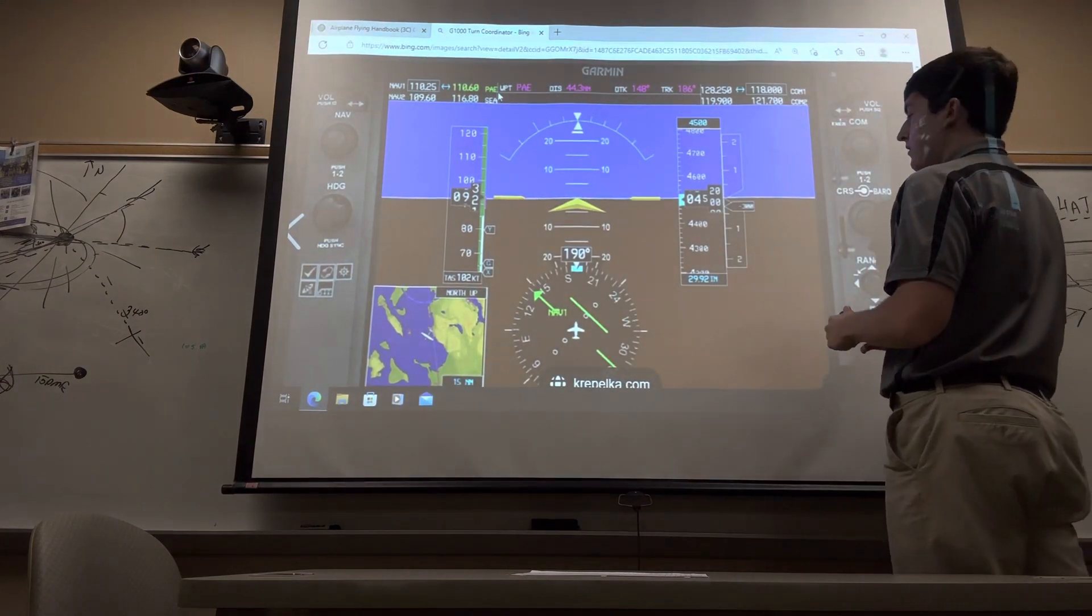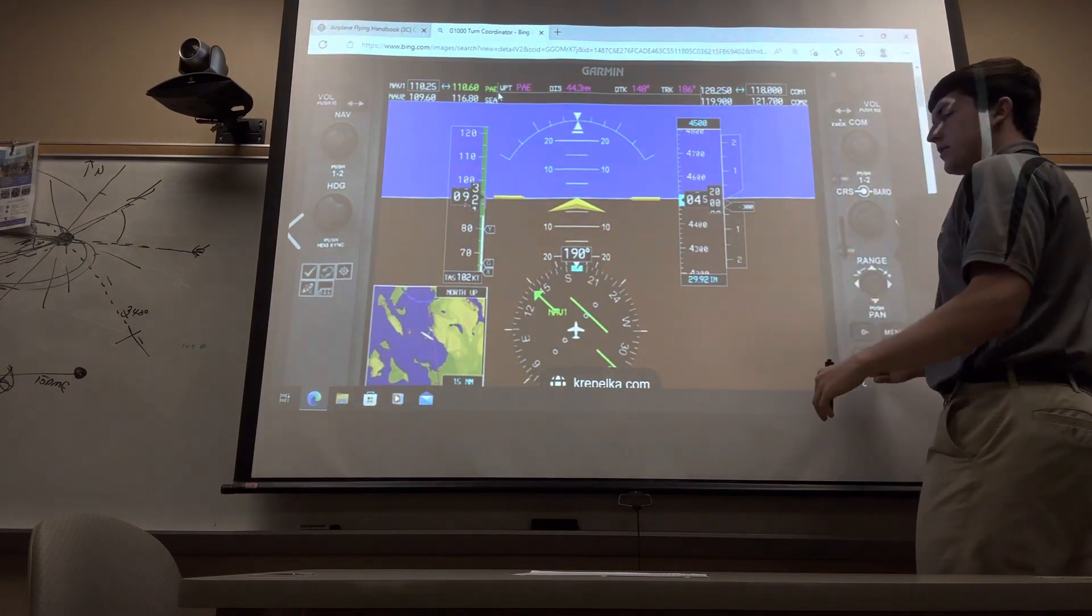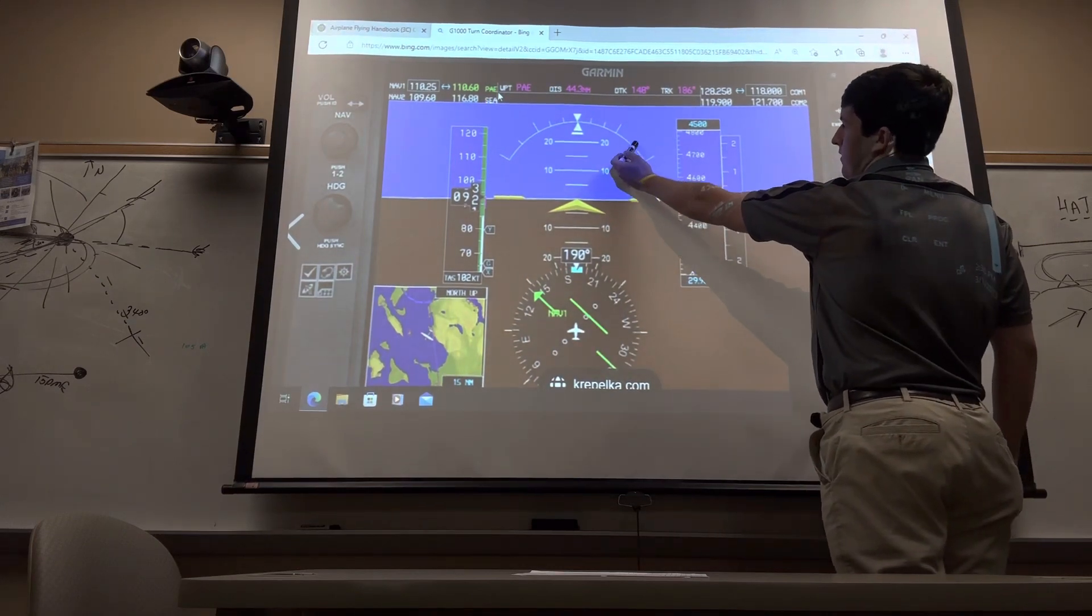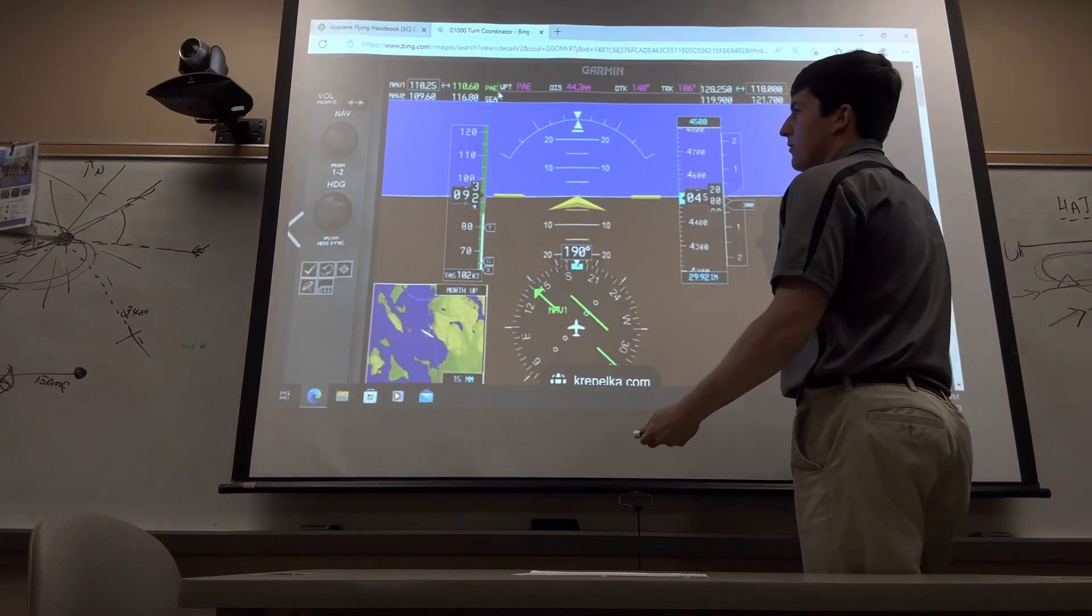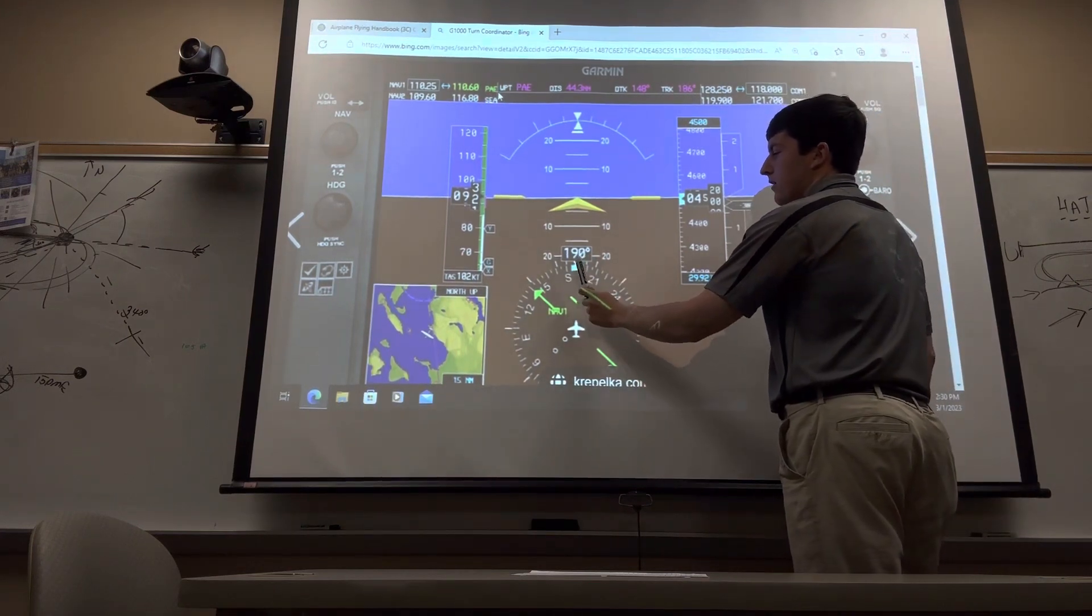That's basically what it looks like once it's established. We would do that to the left, and then as soon as we roll out, we would remove some of that power. Then as we turn back to the right, we go to this right side right here, to this other 45 degree indicator, and then we would do the same maneuver to the right, rolling out in this example on the heading of 190.